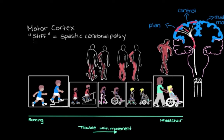That's the stiff or spastic type of cerebral palsy — and it is actually the most common type. The vast majority of people with cerebral palsy, about 70–80%, have one of these stiff types.